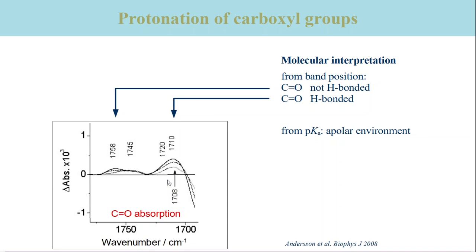In order to find out exactly which residues become protonated, mutants have to be used, where individual aspartate or glutamate residues are replaced by non-protonatable residues like asparagine or glutamine. This was not possible for the calcium ATPase, because it turned out to be very difficult to produce enough recombinant ATPase with single amino acid replacements, and because of lack of funding.